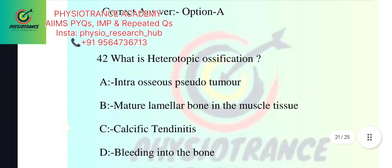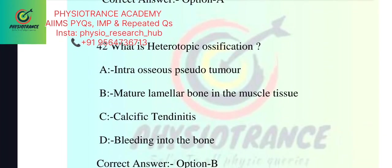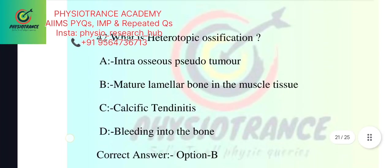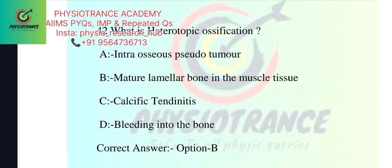The options are: intraosseous pseudotumor, mature lamellar bone in the muscle tissue, calcific tendinitis, buildup into the bone. The correct option is mature lamellar bone in the muscle tissue.